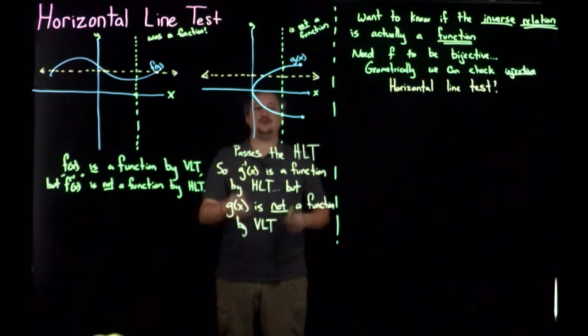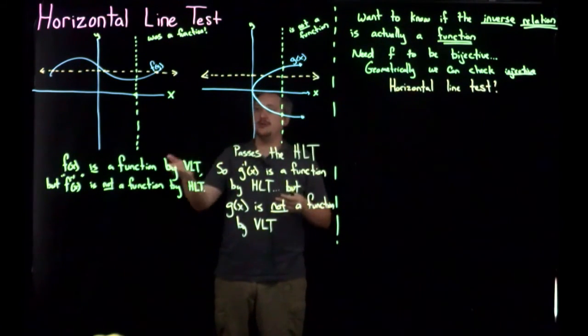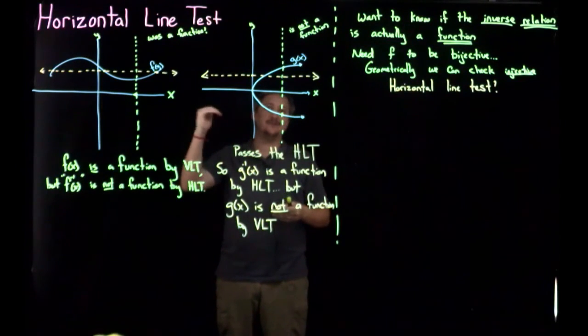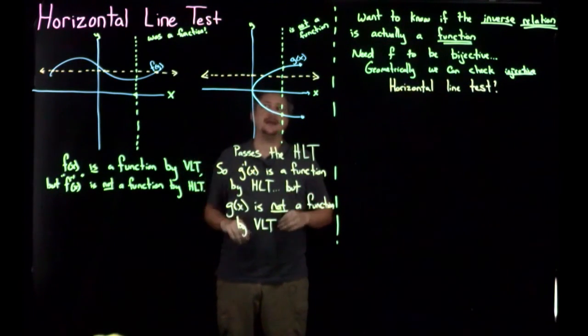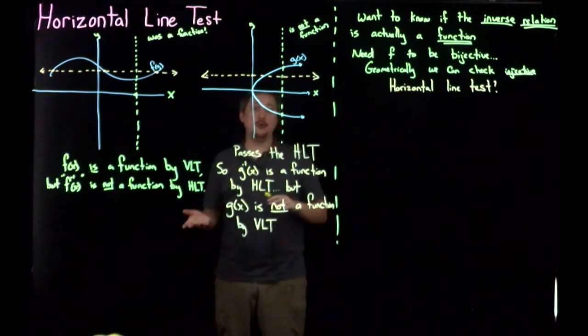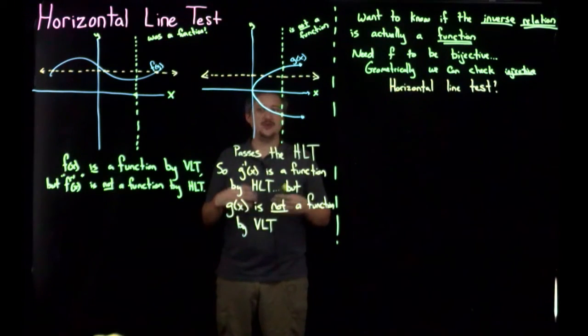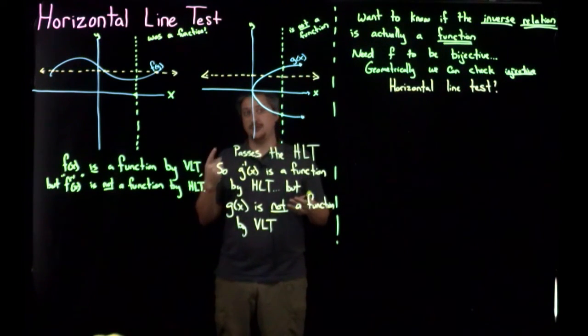So vertical line test, this tells you whether or not the original relation is a function. The horizontal line test tells you whether or not the inverse of that relation is a function. And it's possible to have one, the other, both, or neither of these tests succeed. So if they both work, then your original thing is a function and its inverse is a function.